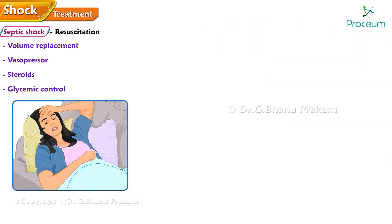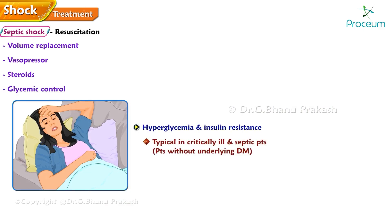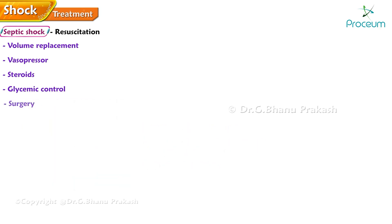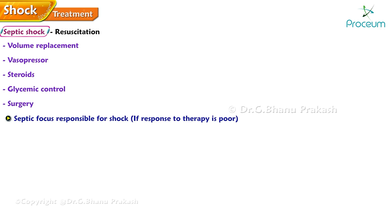Glycemic control: hyperglycemia and insulin resistance are typical in critically ill and septic patients, including patients without underlying diabetes mellitus. Insulin infusion may be needed in those patients. Surgery: if a septic focus is responsible for the shock, it should be dealt with as soon as possible, especially if the response to therapy is poor — for example, debridement or drainage of an abscess.